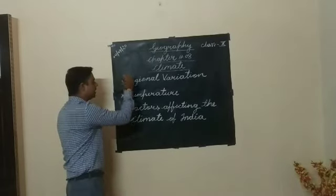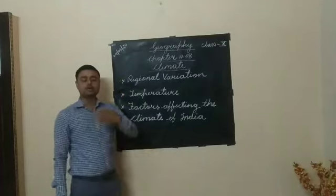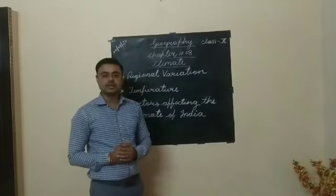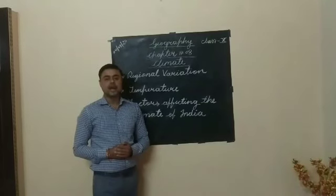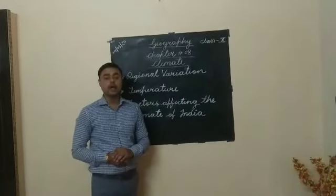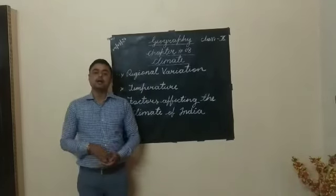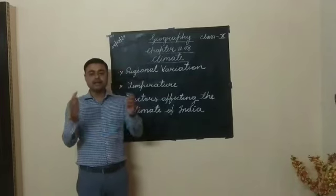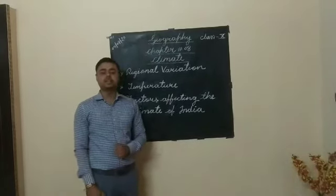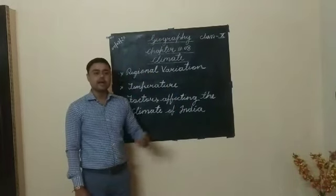The first point of this chapter is regional variation. Regional variation means the different types of climatic conditions present in our country. For example, if we compare the climatic condition of Kerala with Punjab, you find that Kerala has a moderate type of climatic condition. Kerala is situated near the sea and influenced by the sea breeze, so it receives a lot of moisture.